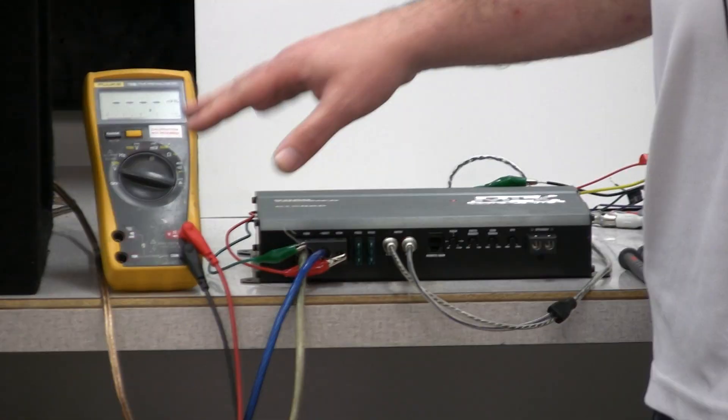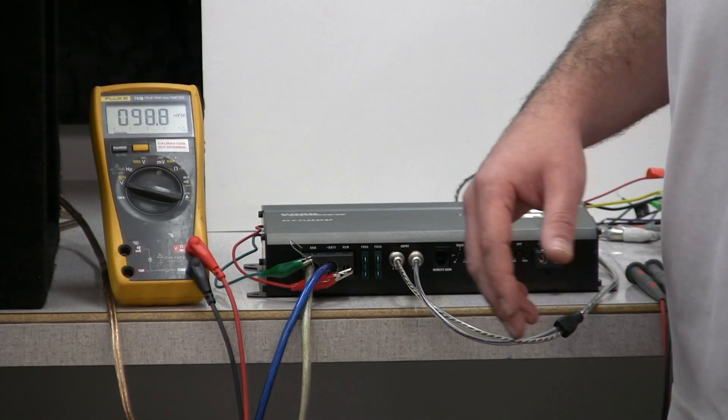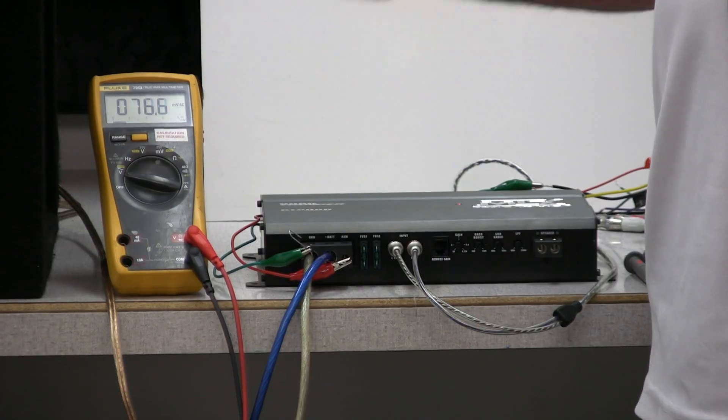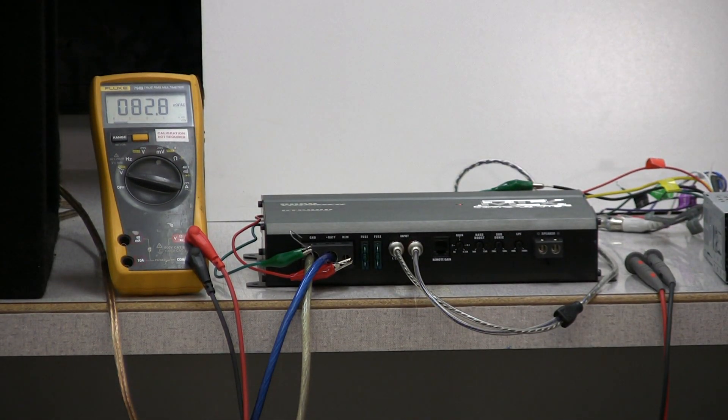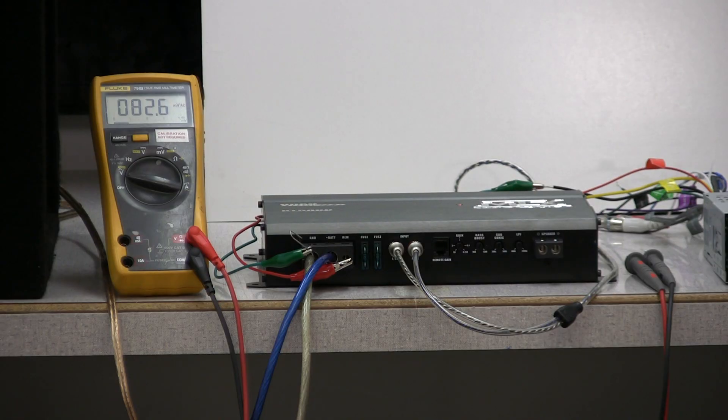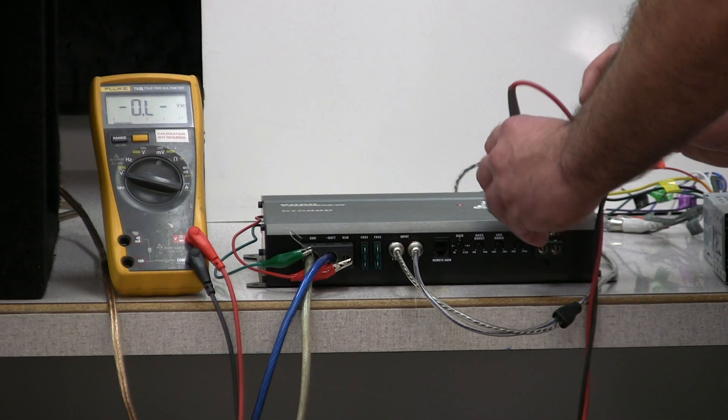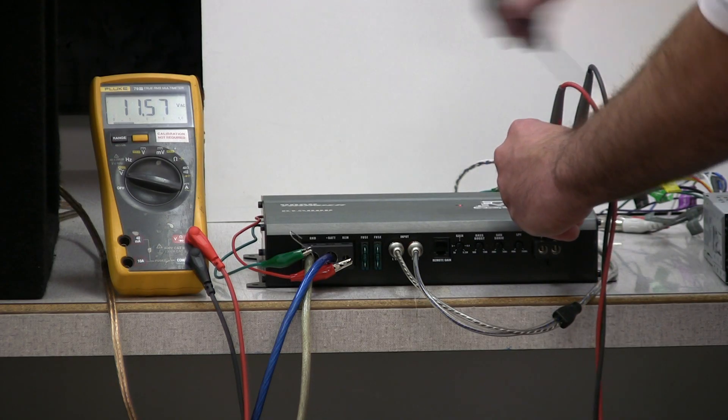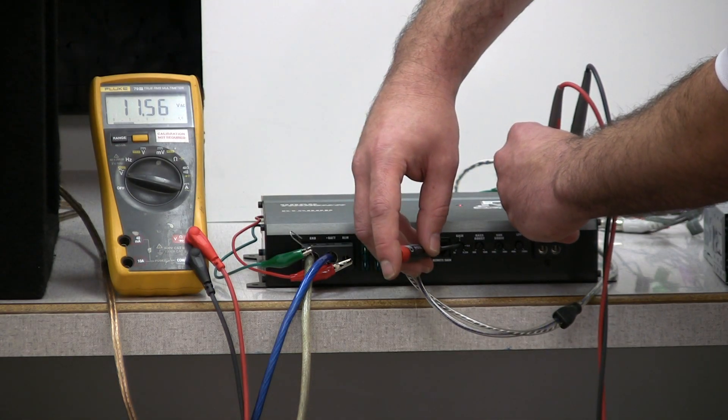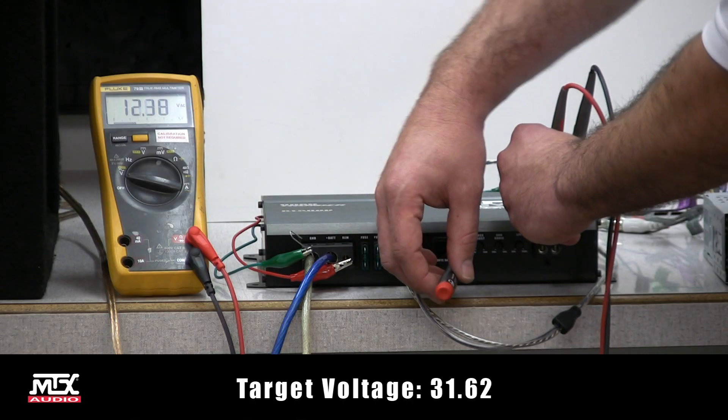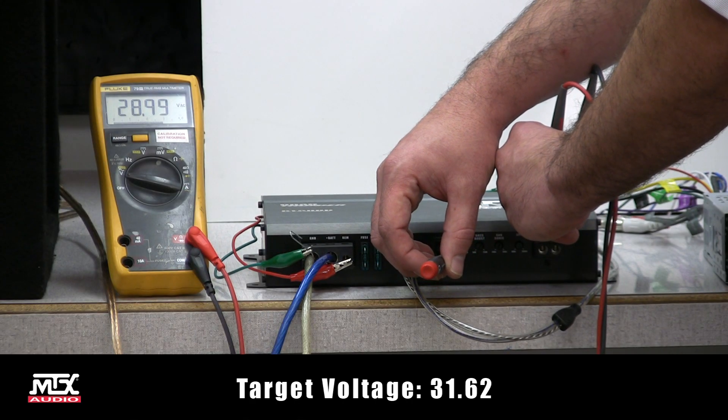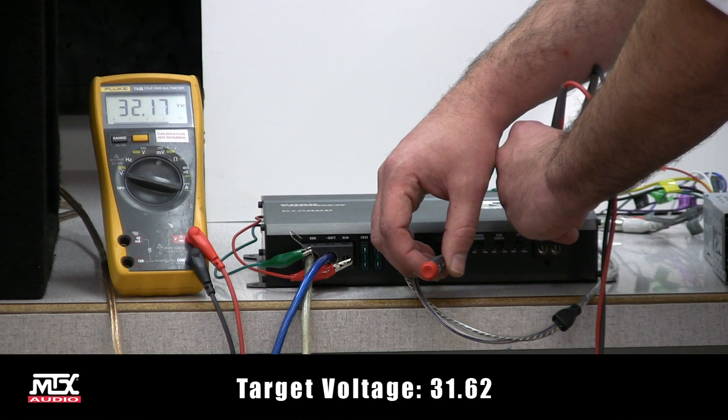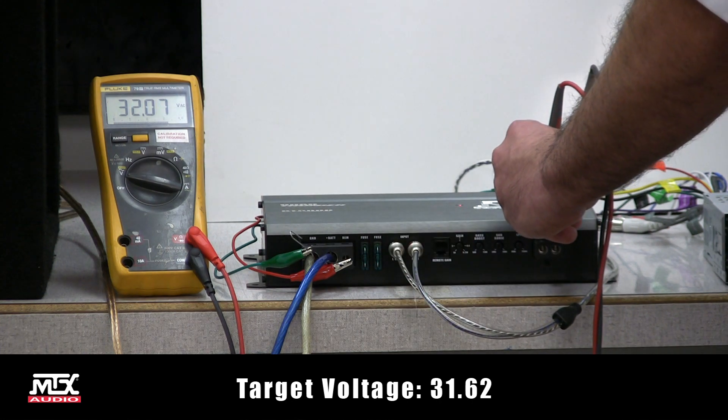We're going to set our meter on voltage AC and we're going to be looking for a target range here. So if you have a multi-level meter setting, make sure that you're in the appropriate range for the voltage that you're looking for. Connect it to your outputs and turn the gain control up until you see the target voltage. That's close enough.